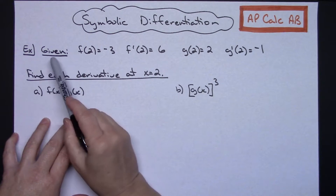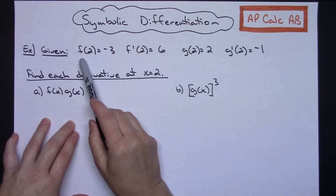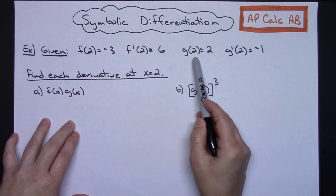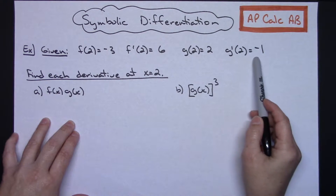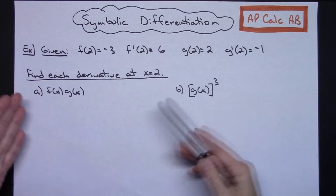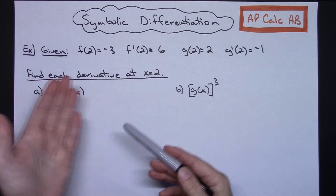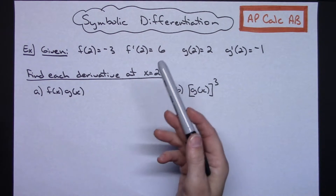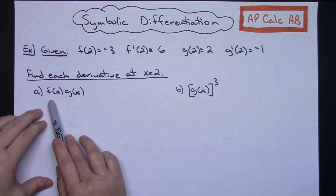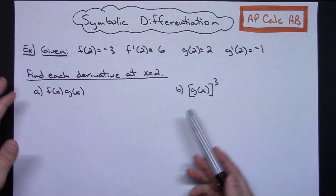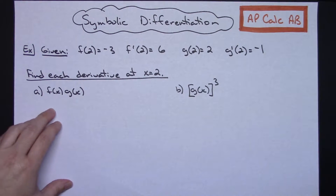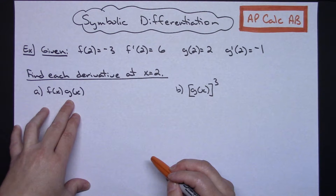In this first example, let's say that you're given f(2) equals negative 3, f'(2) equals 6, g(2) equals 2, and g'(2) equals negative 1. That's the only thing they give you — they do not tell you anything about what the particular functions are, so we don't know the g function, we don't know the f function. Even though you do not know those, we can still find the derivative at x equals 2 for any expression they give us. So you've got to look at this and see what's going on between these two functions.